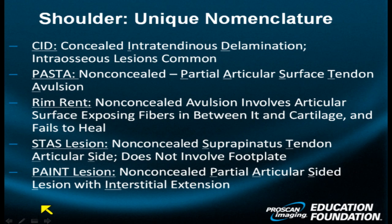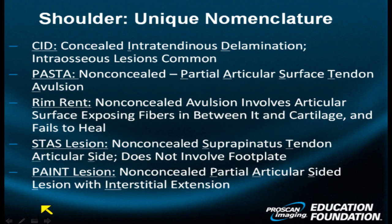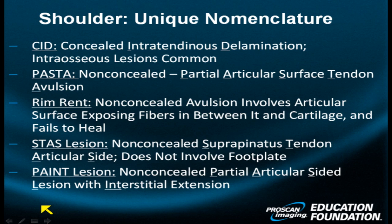The Stoss lesion. This is a non-concealed supraspinatus tendon articular-sided lesion. It does not involve the footplate or footprint. It is not concealed, so it is visible from the inside out, or by the arthroscopist.